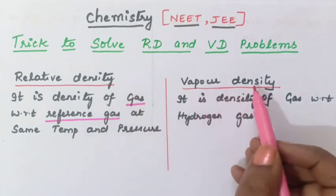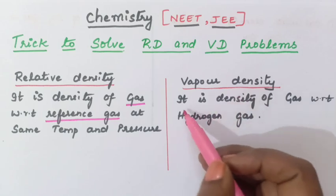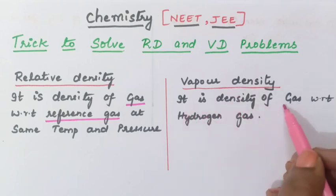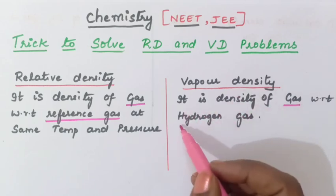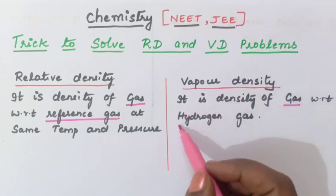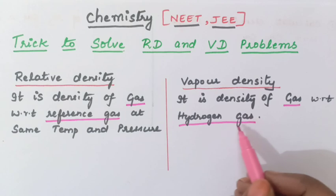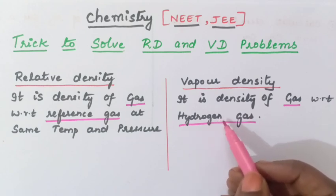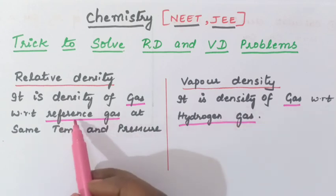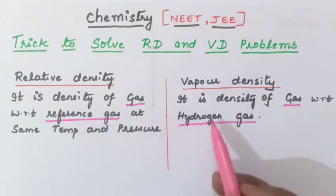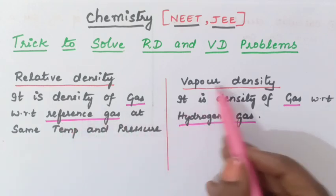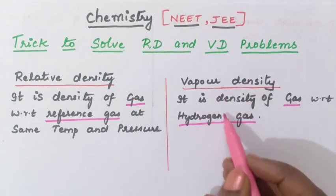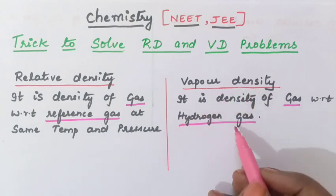Next is vapor density. It is the density of a gas with respect to hydrogen gas. This is the key difference: in vapor density, the reference gas is particularly hydrogen gas, H2.